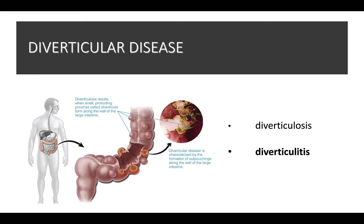Diverticulosis can be asymptomatic — in other words, you don't have any symptoms. You don't need to modify anything in your diet when you have diverticulosis; a high fiber diet is recommended in general. But if these pouches become inflamed and the person develops diverticulitis, then we recommend a low fiber diet and bland food. If there's concern of a bacterial infection, medication may be given. Worst case scenario is surgery. The idea is you want this inflammation to heal, then the person is able to go back to their normal diet.